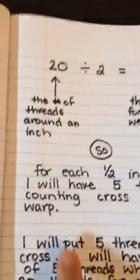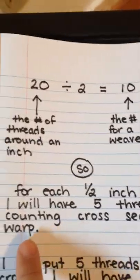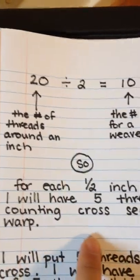So for each half inch of the raddle I will have five threads in my counting cross section of the warp.